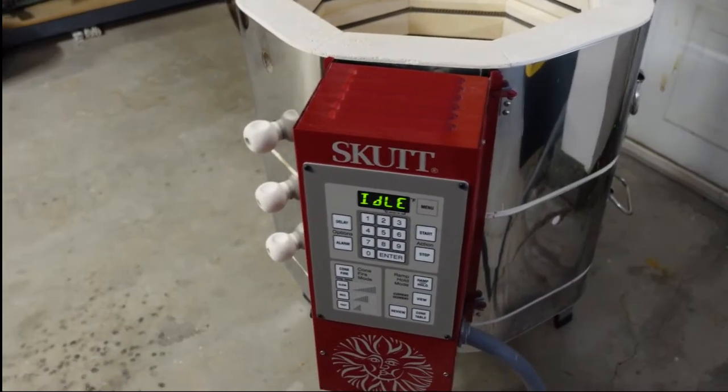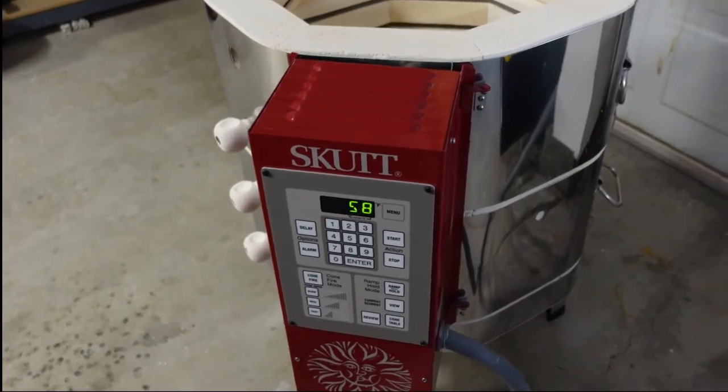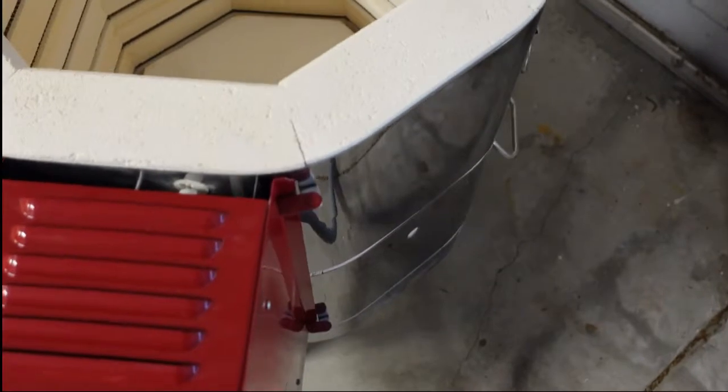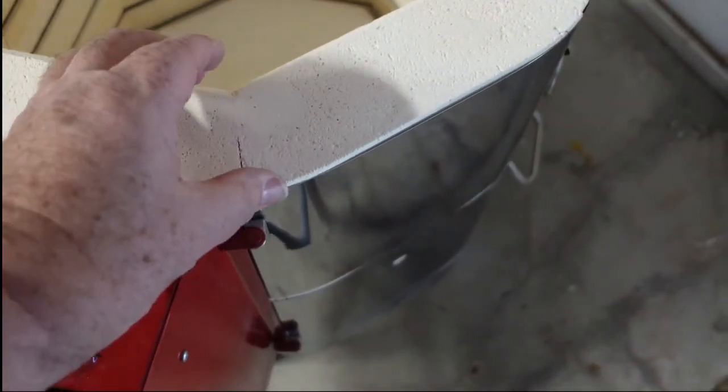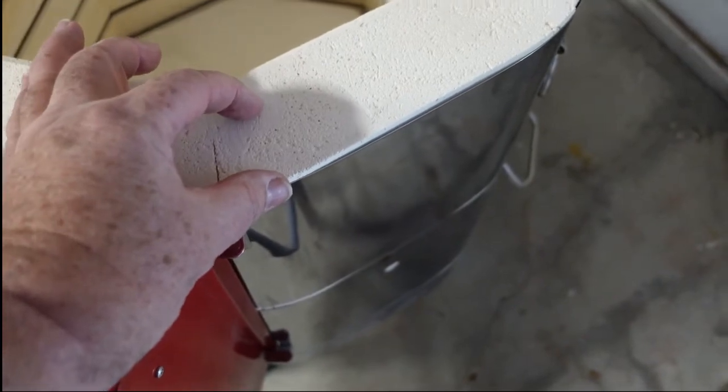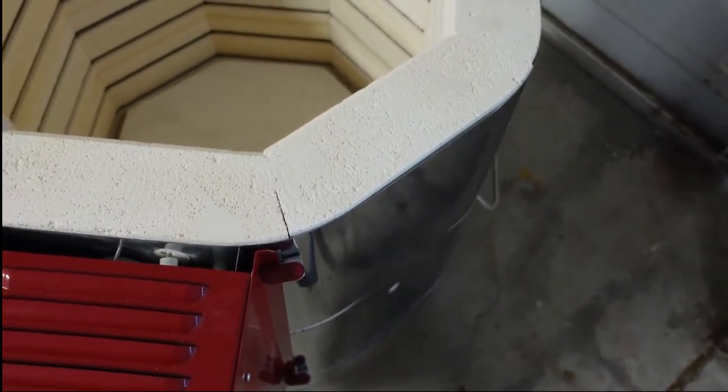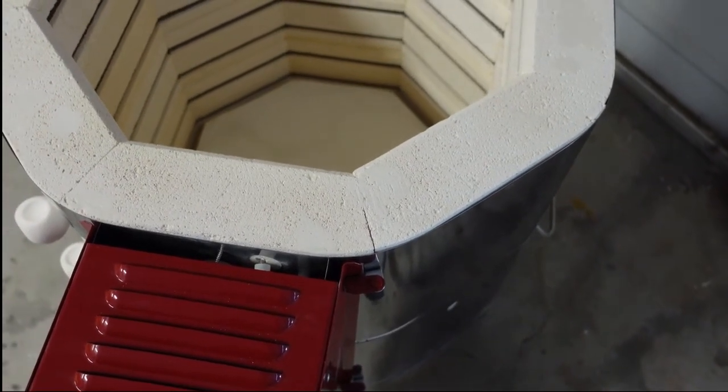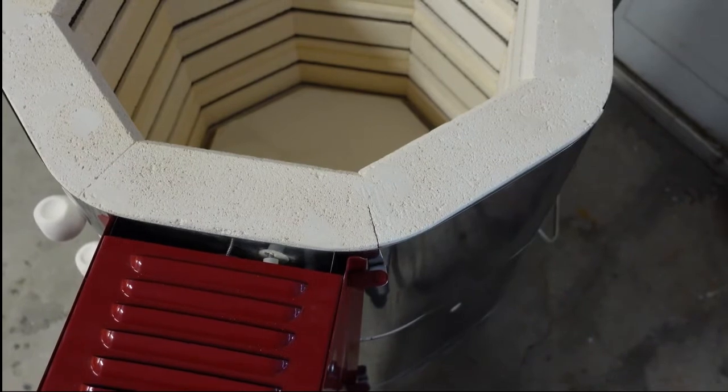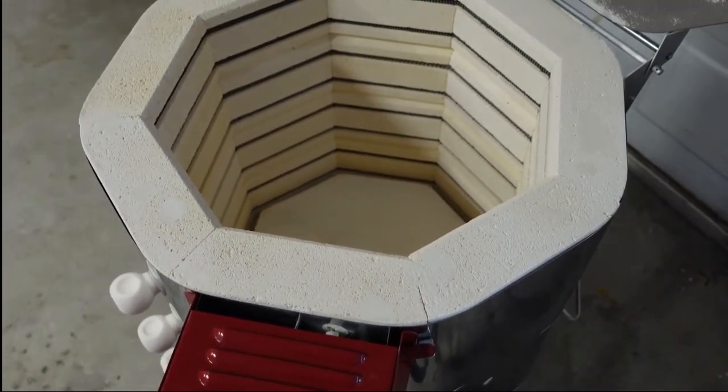This is the Skutt 818-3 kiln. The dash-3 stands for the thickness of the fire brick. This fire brick's three inches thick. The standard is, I believe, two and a half. A little bit thicker brick is a fairly inexpensive option and it also helps your pottery cool a little slower, which is good for a lot of your glazes and also maybe to keep your pottery from cracking.